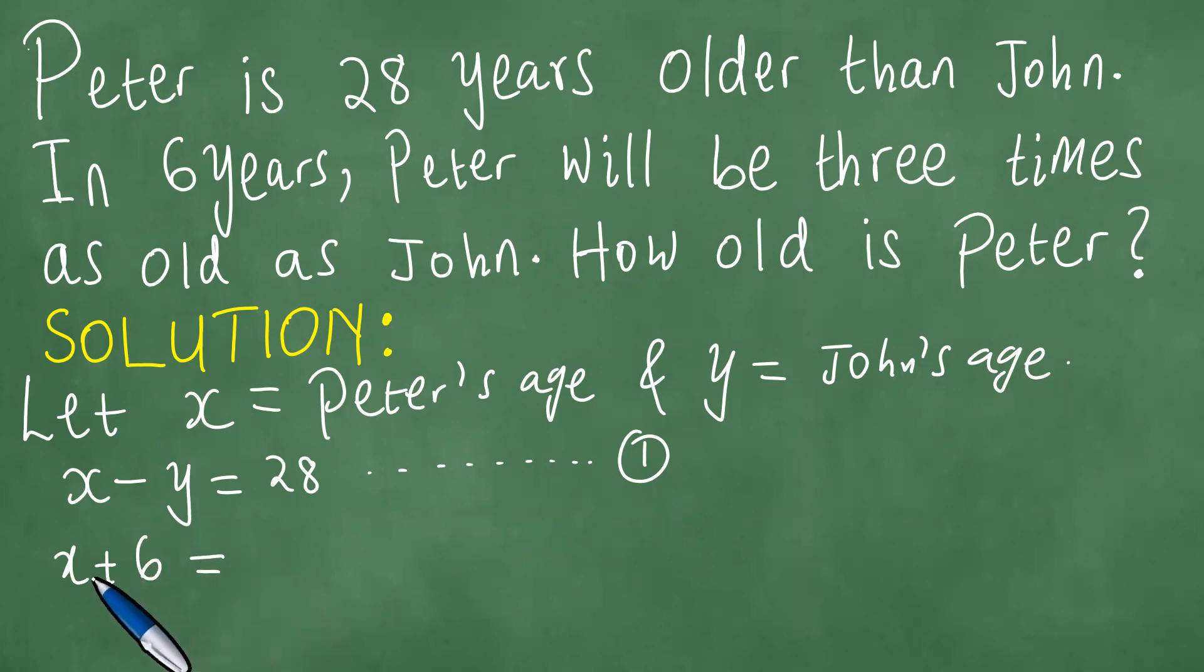But it's going to be three times as old as John, so we must multiply John's age by 3 and it is understood to be in six years, which means x plus 6 equals 3y plus 18.